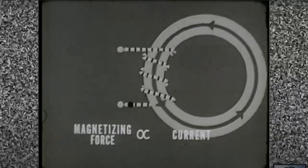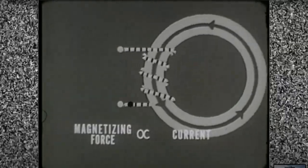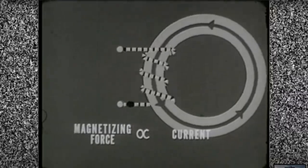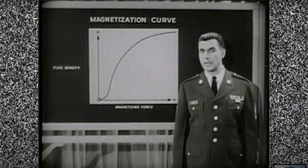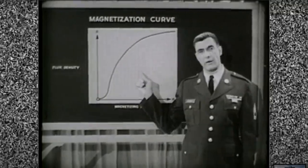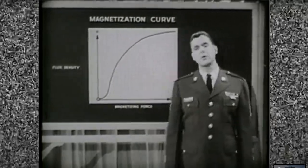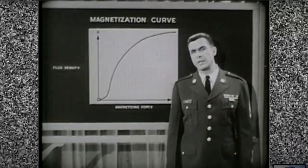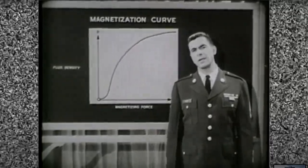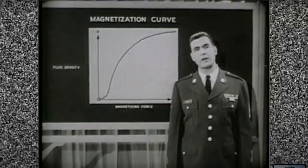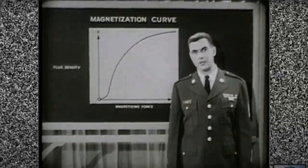Suppose we increase the amount of current. Will the total magnetism of the core also increase? It will, but not proportionately, as we'll see on this graph. We're going to take a minute and trace the magnetization curve of a core. Because in this way we can point up some of the characteristics that make cores so useful.